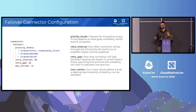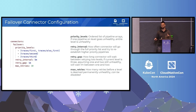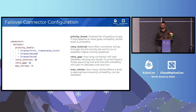To quickly go over the configuration for the connector: the main and only required parameter is priority level. It's an array of arrays where you can put multiple pipelines at each level. One caveat is that if a single pipeline goes unhealthy, the entire level is viewed as unhealthy and it fails over to the next level. Retry interval is how often the connector will go back to the top of the list and work its way down trying to reestablish a healthy connection. Retry gap is how long it'll wait between two levels.